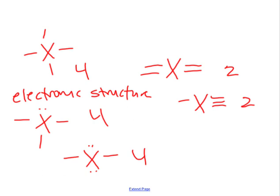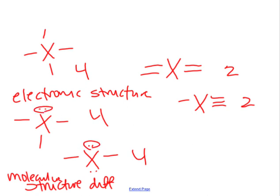What's different about these is their geometry or their shape in space. Their molecular structure is different. And what dictates that difference are the behavior of those lone pairs and how they repel bonded pairs. Hence valence shell electron pair repulsion, where that comes from.